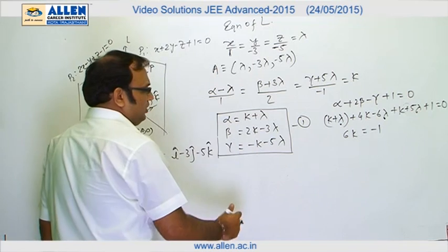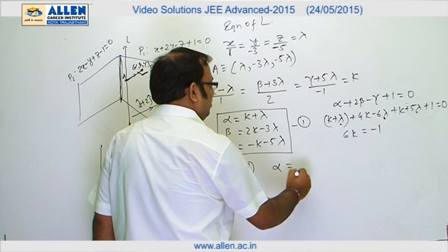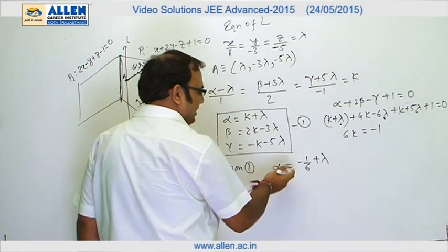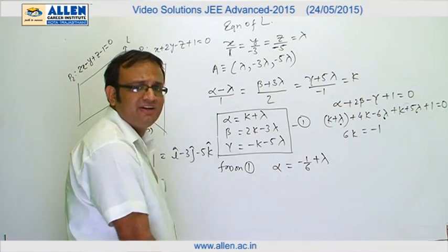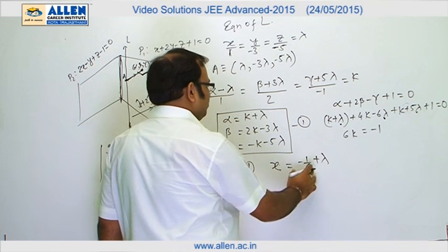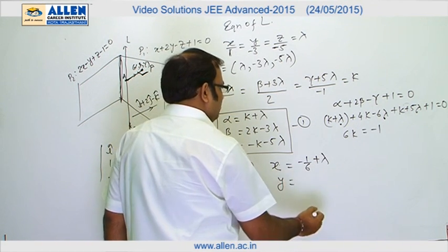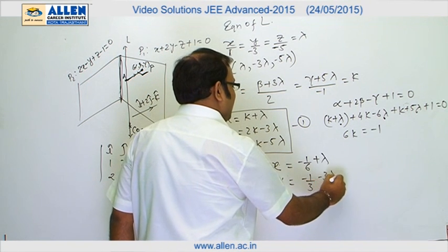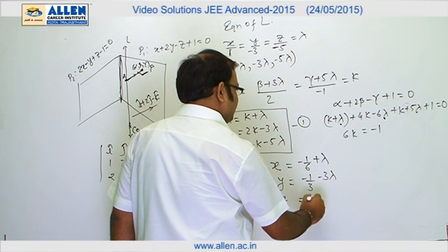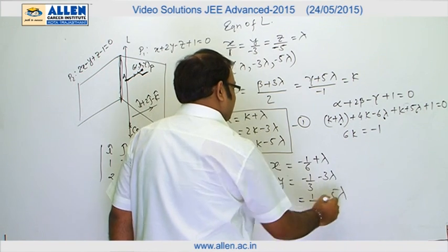Putting k = −1/6 into equation 1: α = −1/6 + λ, β = −1/3 − 3λ, and γ = 1/6 − 5λ. We can now rename α, β, γ as x, y, z since we have obtained the locus.